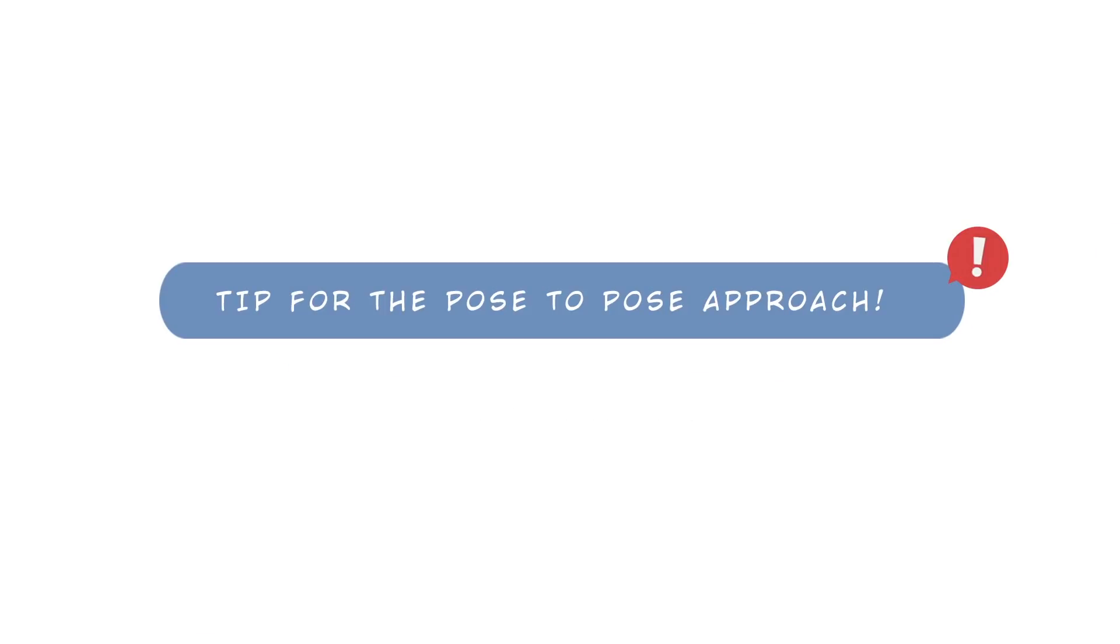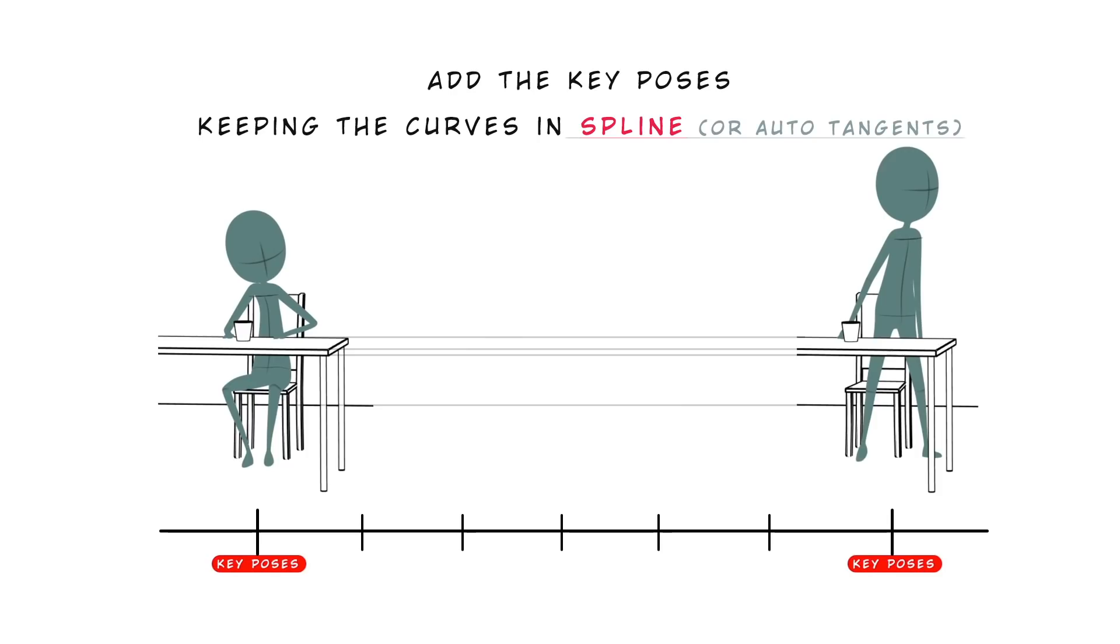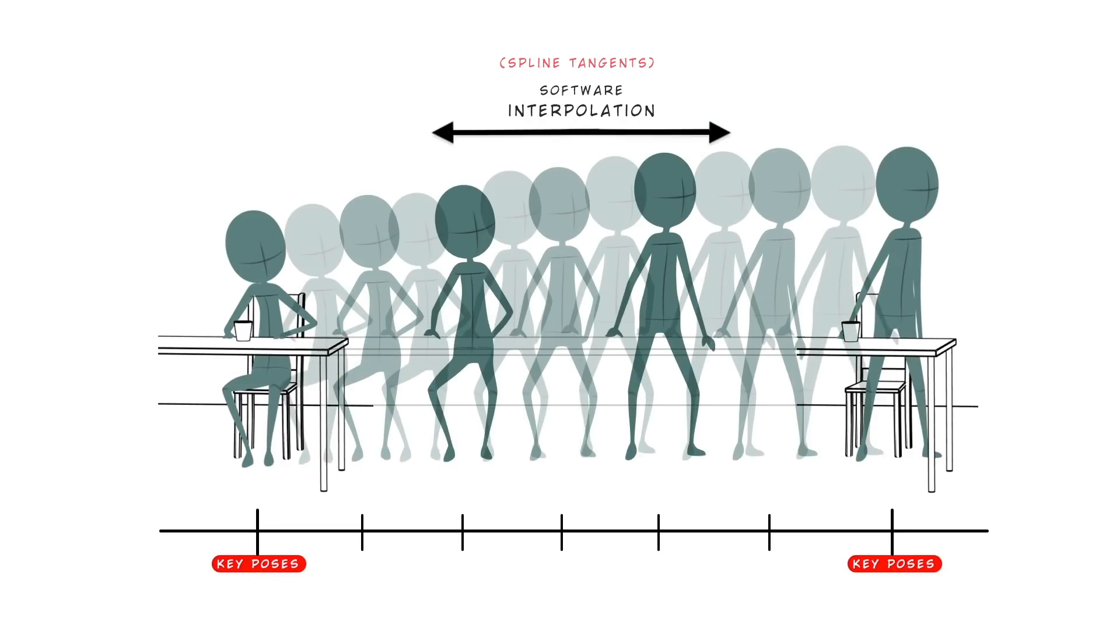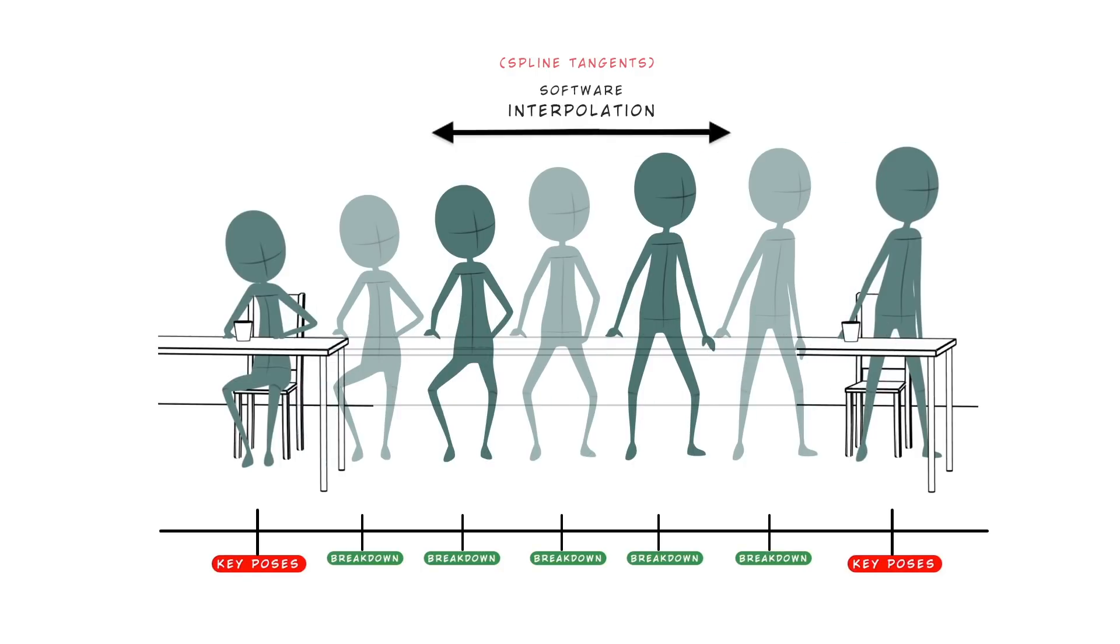Tip for the pose to pose approach. Right now one of my personal methods to create pose to pose without adding too much key poses is to start creating the key poses in spline with no breakdowns. So in this way we will have the softer interpolation between the key poses so I add the keys where I want my breakdowns.